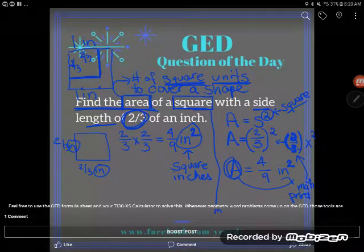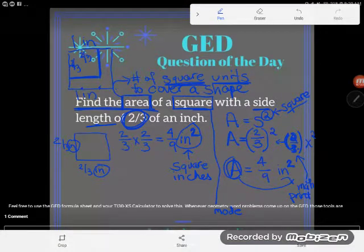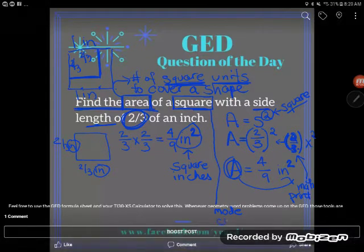You're going to hit the mode button, mode, mode. You're going to go down to the last line, and you're going to see the last line has two options. There's classic, and there's math print.